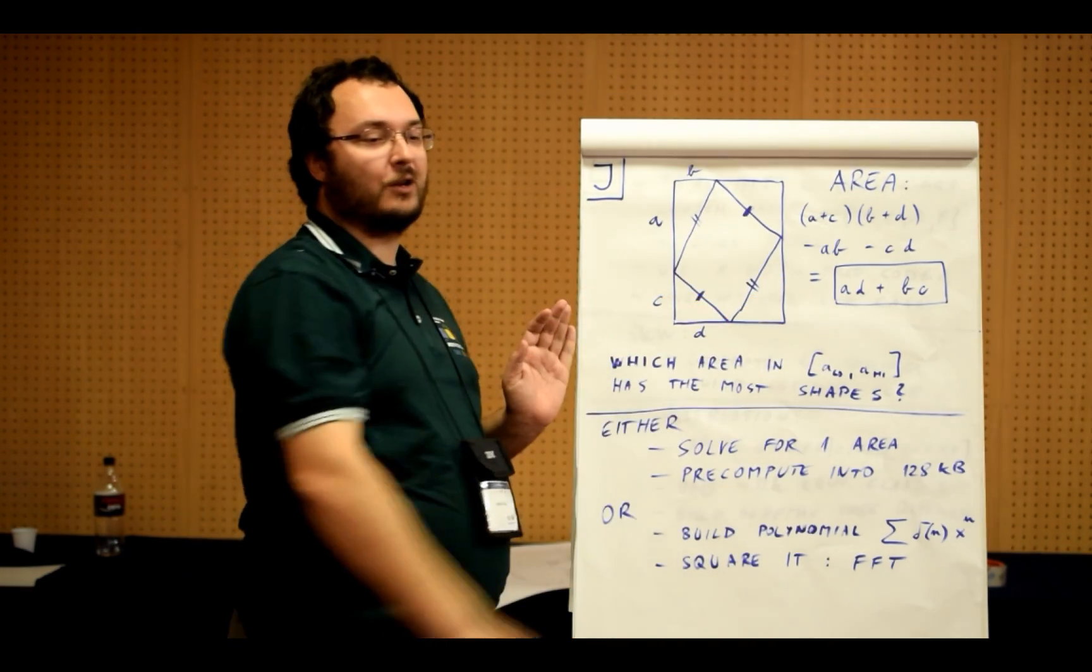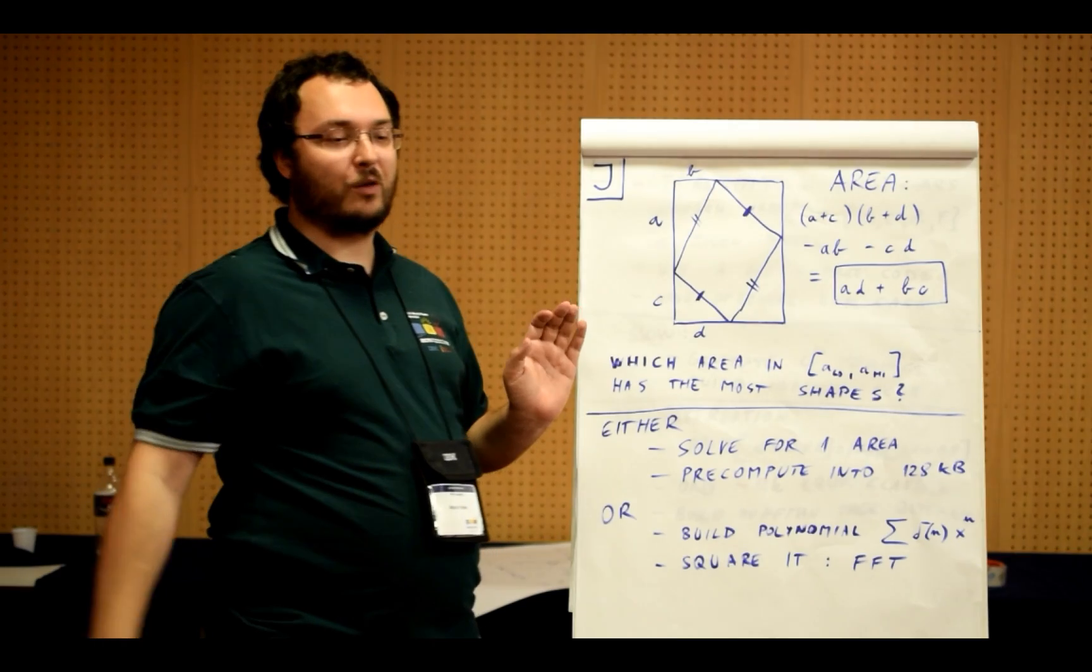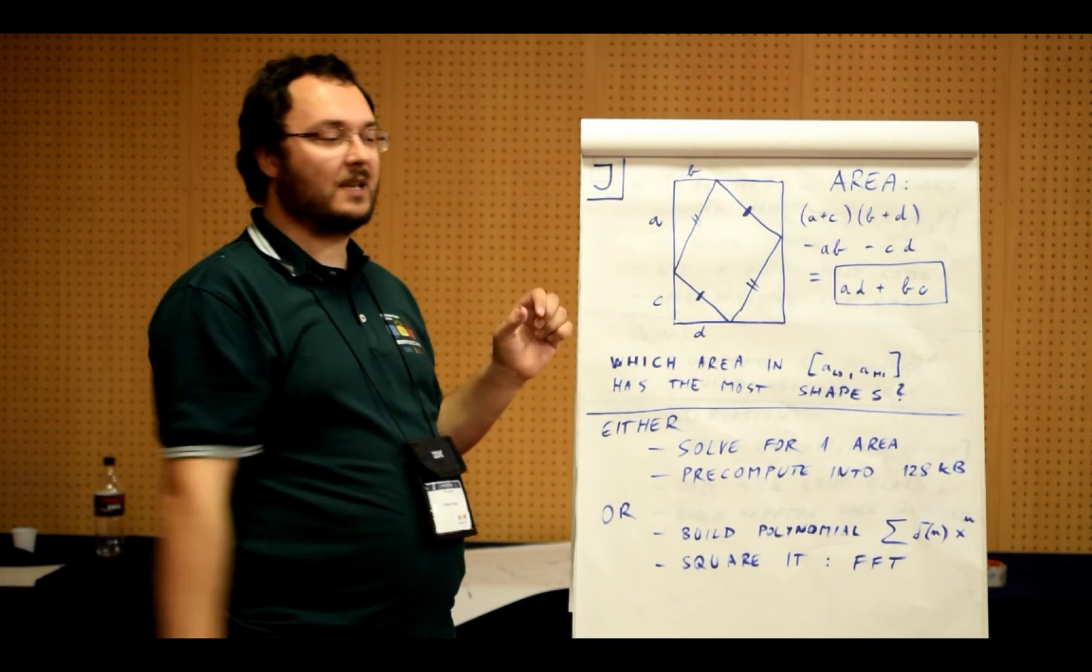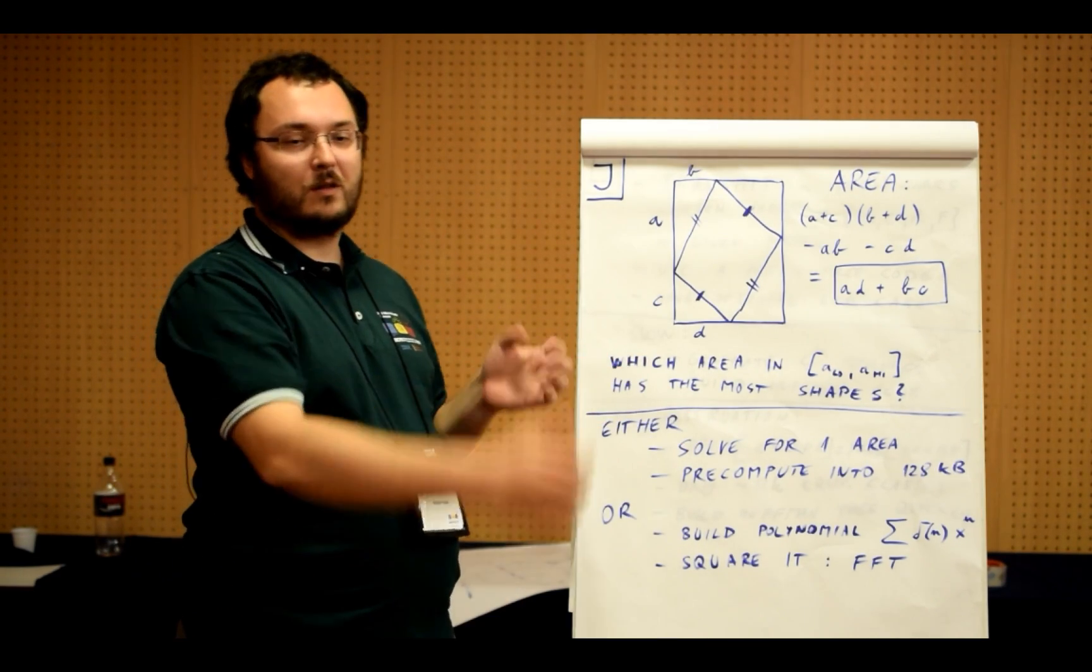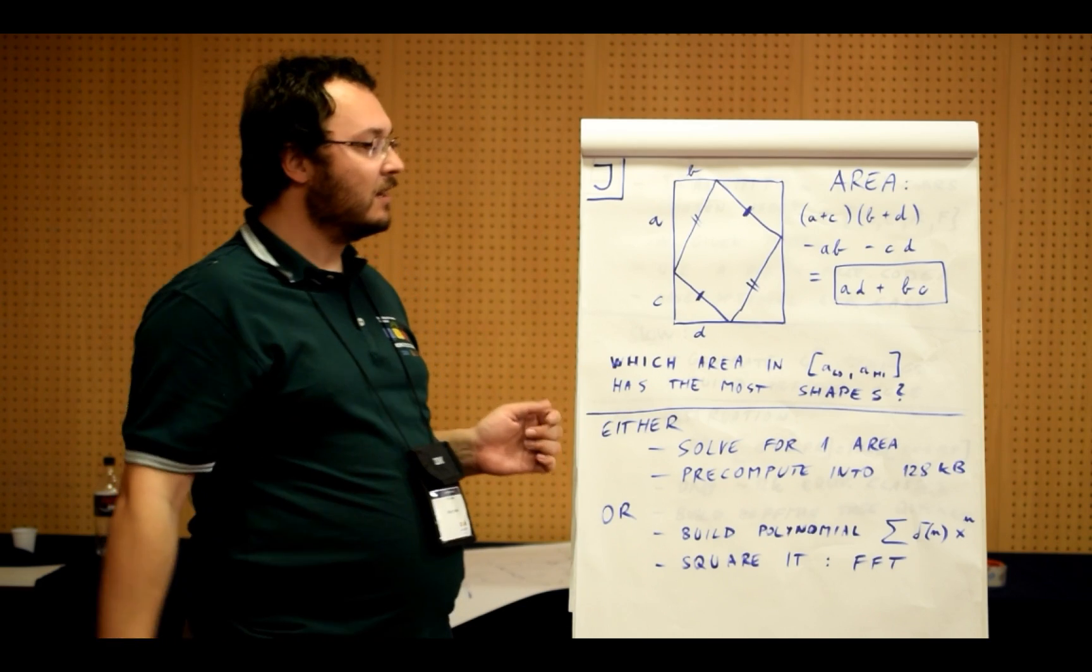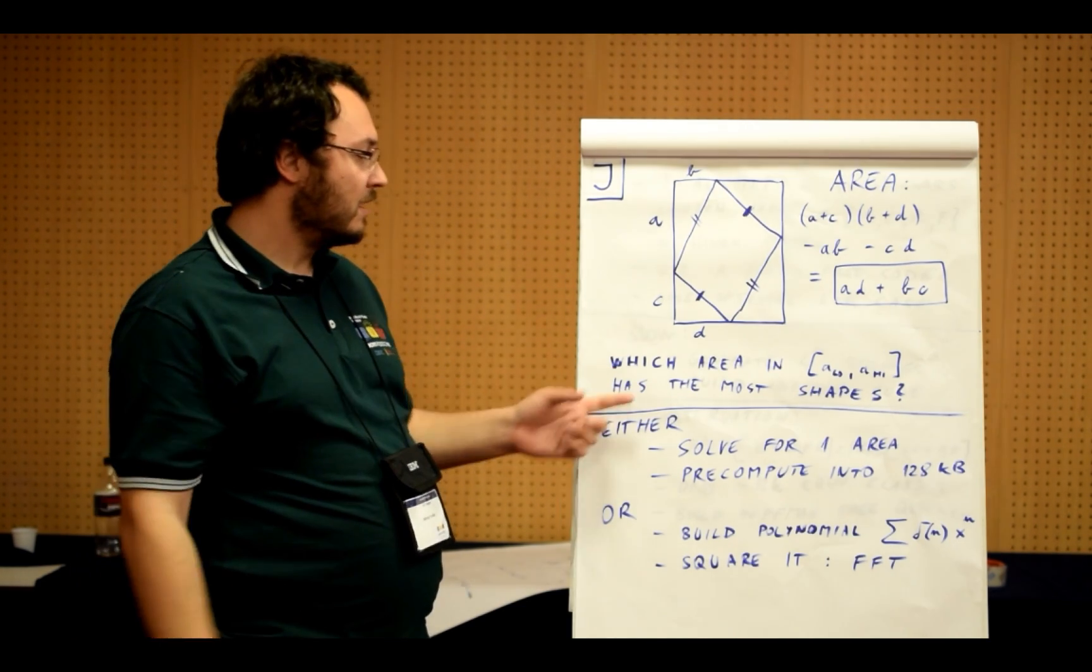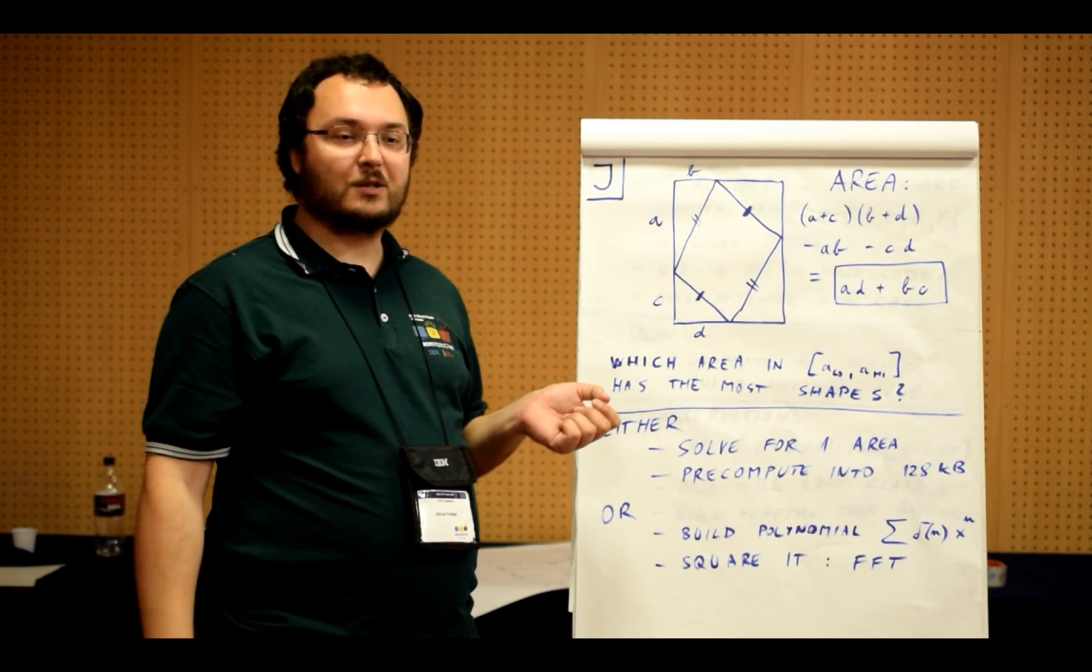The source code size limit is 128 kilobytes, so for instance divide this entire interval of areas from 1 to 500,000 into segments of length 50. For each of them you pre-compute the maximum and then you do the additional computations needed in your code.